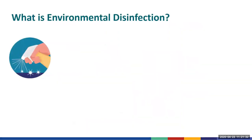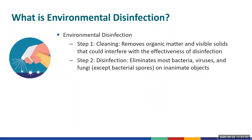Moving on to our next topic: what is environmental disinfection? Environmental disinfection is a two-step process. Step one, the cleaning step, removes organic matter and visible solids that could interfere with the effectiveness of disinfection. Step two, the disinfection step, eliminates most bacteria, viruses, and fungi, except bacterial spores, on inanimate objects.